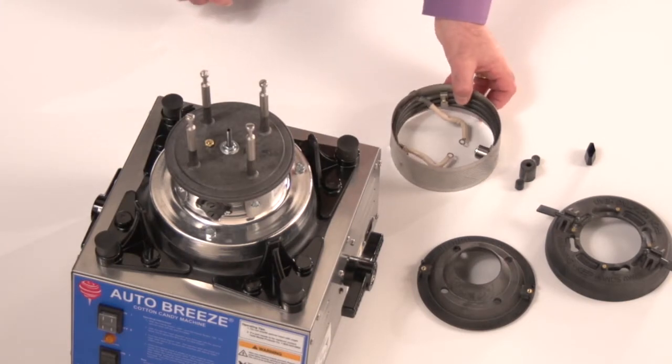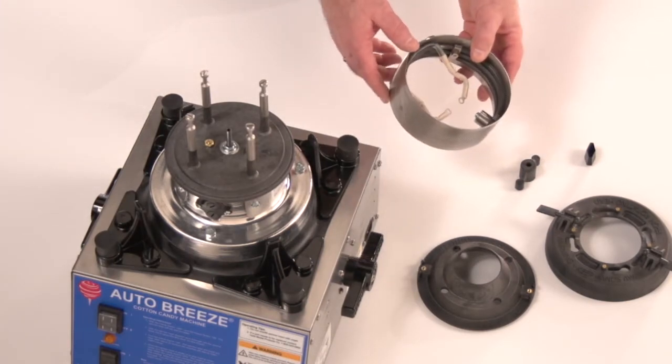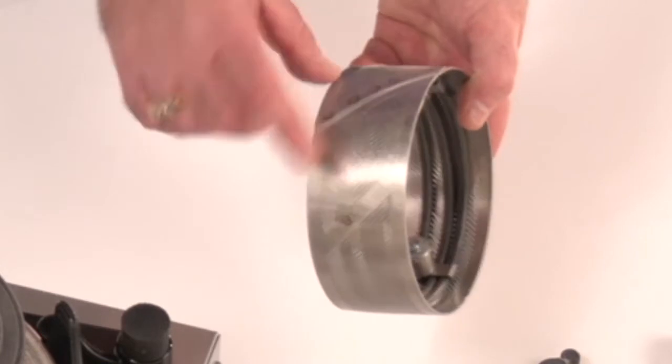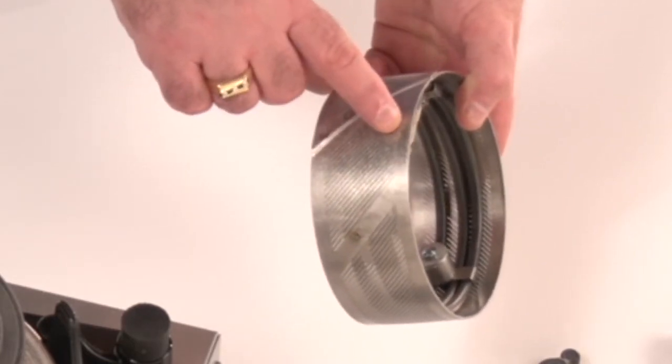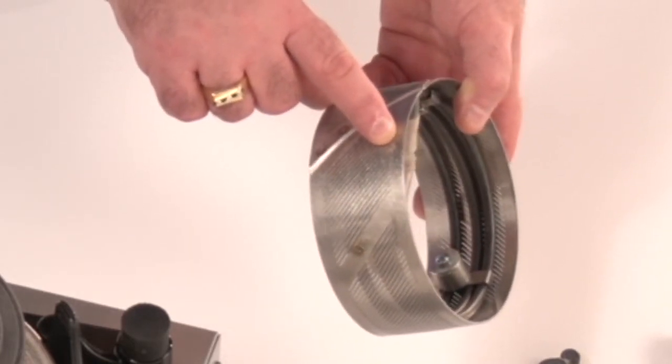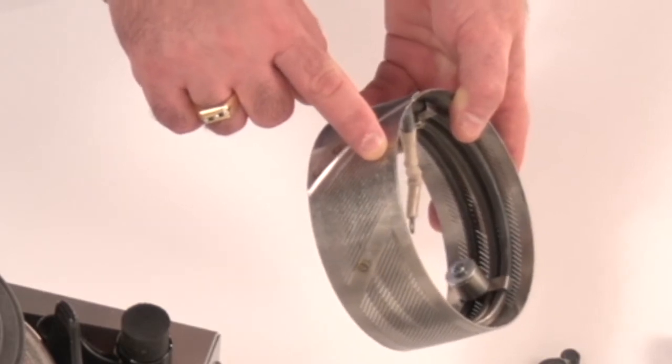Now to reassemble the head, the first thing that we will do is install the heat element. On the outside of the stainless steel band, the word 'top' is marked on the stainless steel band, so make sure that that part is facing upwards.